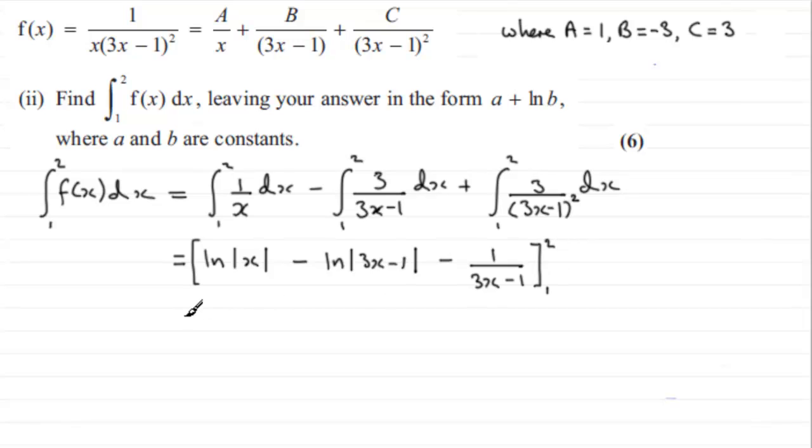So we just substitute 2 in first of all, and then subtract what we get when we put 1 in for x. So when we put 2 through, we're going to have the natural log of the mod of 2, but 2 is a positive number, so we don't need the mod anymore. And then when we put 2 into here, we've got 3 times 2 is 6, take away 1 is 5, so again we don't need a mod for that one, so it's minus the natural log of 5. And for this one here, putting 2 through, we've got 3 times 2 is 6, minus 1 is 5, so we've got minus 1 fifth.